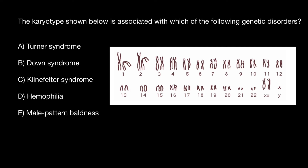Out of these five genetic disorders, two are caused by mutations in genes. Answer E, male pattern baldness, we can cross out, and hemophilia is also caused by a mutation in an allele found on the X chromosome, so we can cross that out as well.